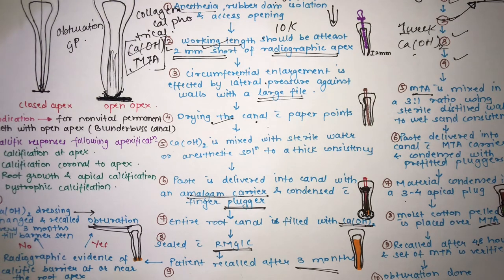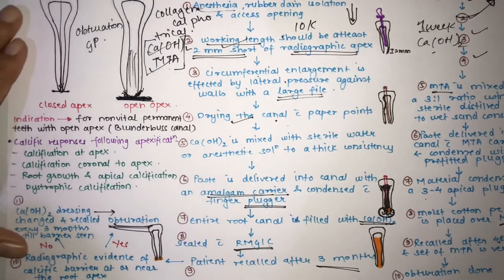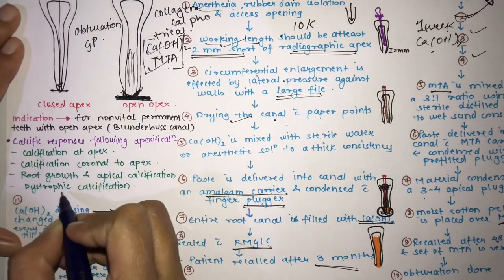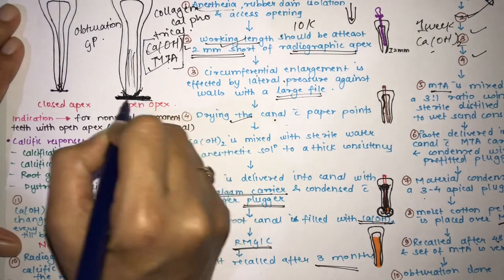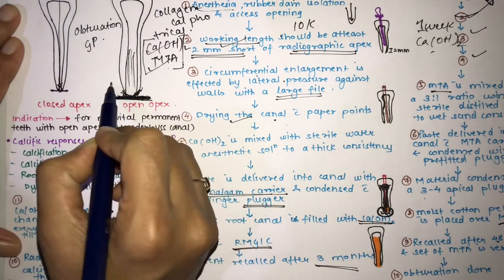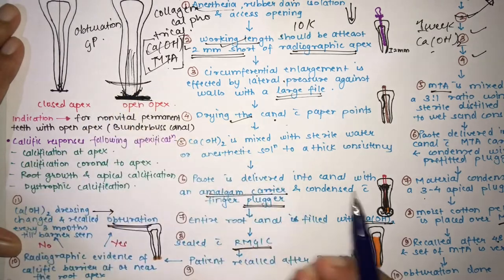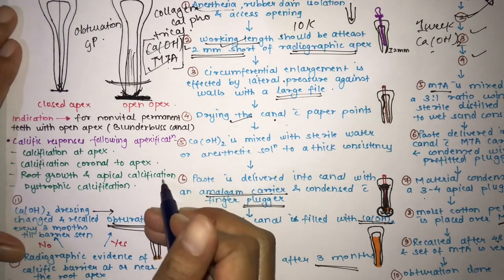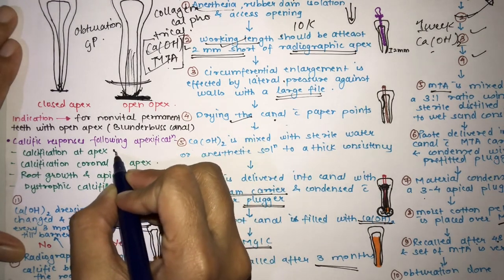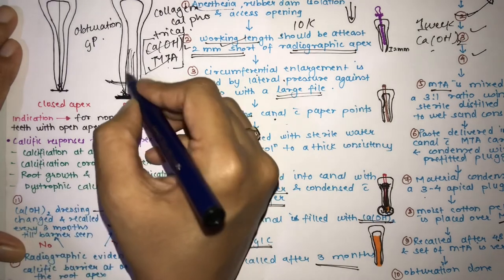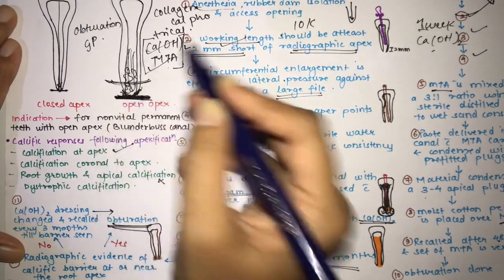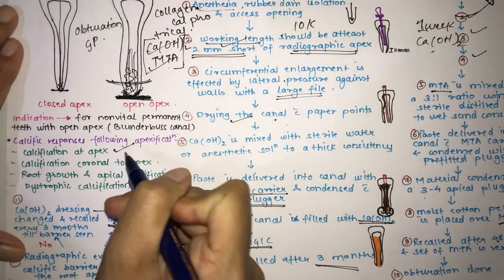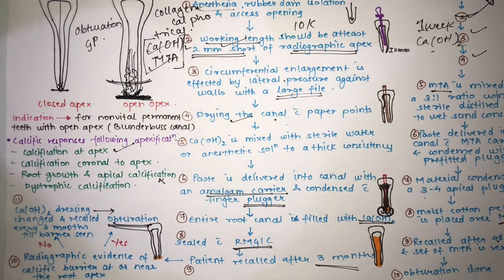After apexification, there are four possible radiographic outcomes: a calcific barrier formed at the apex; a calcific barrier formed coronal to the apex; root growth with apical calcification (very rare); or dystrophic calcification seen within the canal. The most commonly seen outcome is a calcific barrier that has formed.